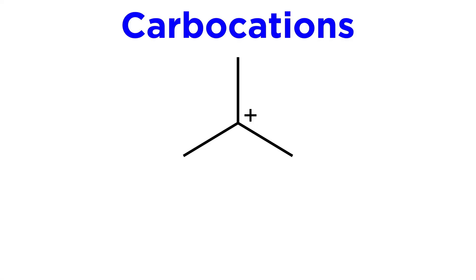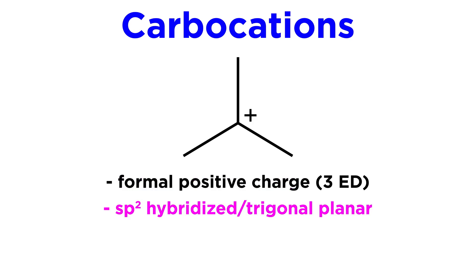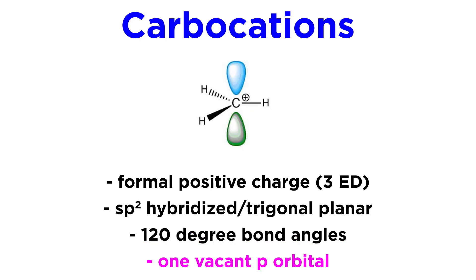First, a few details about carbocations. These are carbons with a formal positive charge because they have lost an electron domain. Because of this, they are sp2 hybridized and trigonal planar, so they are totally flat about the carbocation, with 120 degree bond angles. This means that there is one remaining unhybridized p orbital, and this will be vacant, extended on lobes perpendicular to the plane of the molecule.